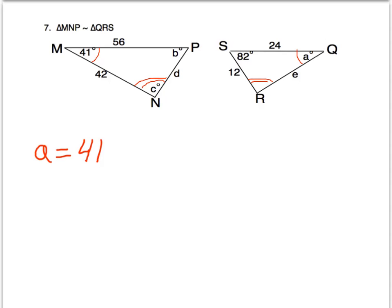However, we don't know anything about angle N and angle R. So let's take a look at the last angles named in the triangle. Angle P must be congruent to angle S. And since 82 is angle S, I know that B is equal to 82.